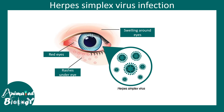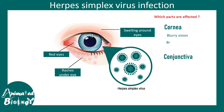Herpes simplex virus can also affect the eye — specifically the cornea and conjunctiva. There is generally swelling around the eyes, red eyes, and rashes around the eye region. When the cornea is affected, it leads to blurry vision with a branching dendritic appearance, which is pretty characteristic of herpes. Conjunctivitis causes pain, itchiness, sensitivity to light, and redness.